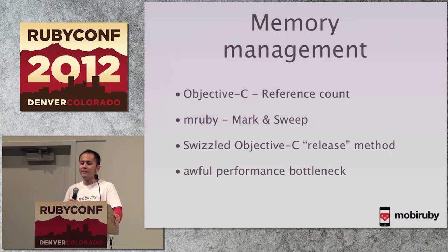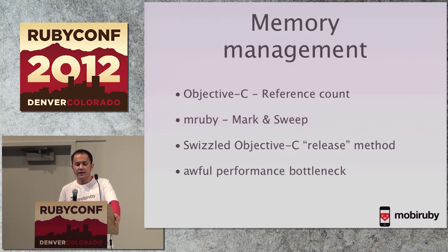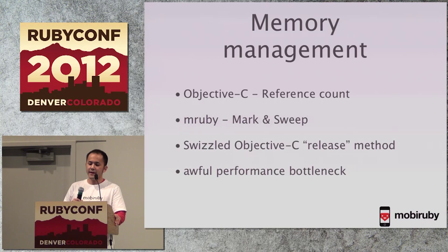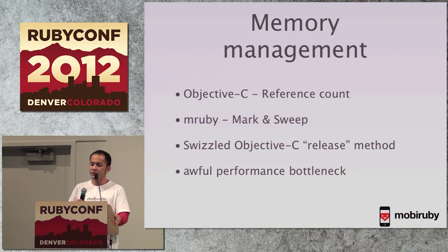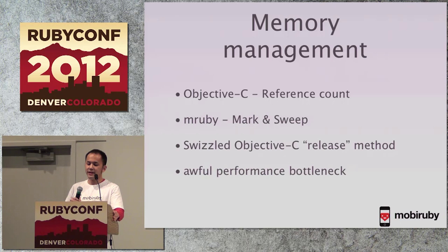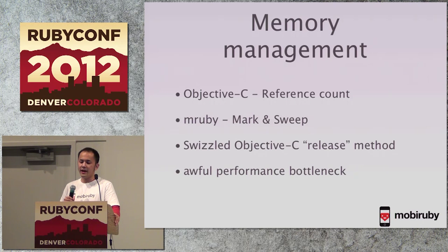The hardest part of this library is memory management. Objective-C uses reference counting and mRuby uses mark-and-sweep — they are different. It's hard to free objects correctly in both environments. Currently, all Objective-C class release methods are being overridden, which is an awful bottleneck for performance. It affects all Cocoa objects, including those not related to mRuby objects. There is still a problem that circular references cannot be detected — I will fix that in the future.